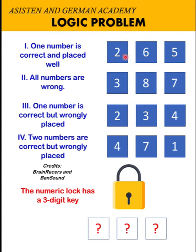The first one is, one number among 2, 6, and 5 is correct and is placed well. Second, all these numbers 3, 8, 7 are wrong.